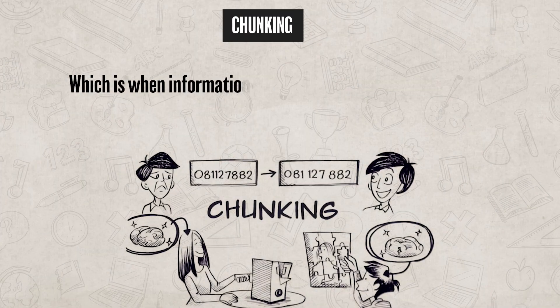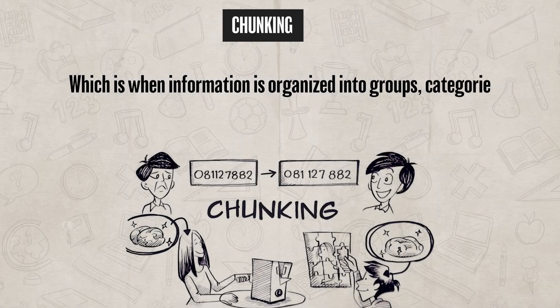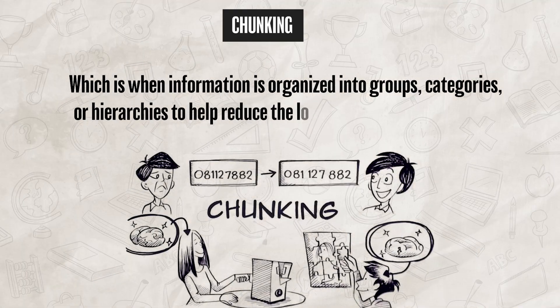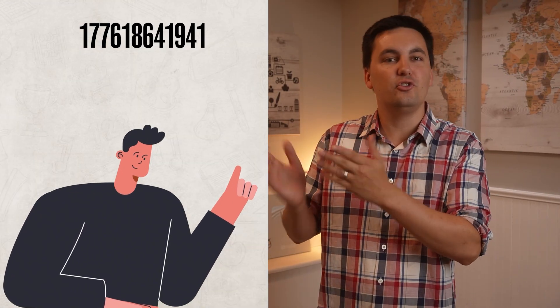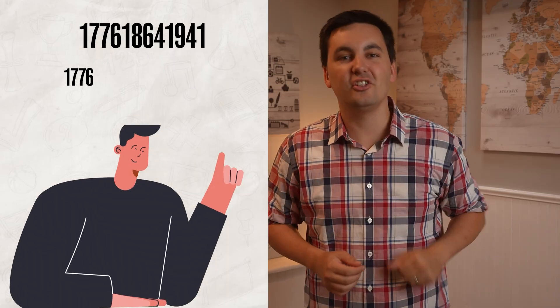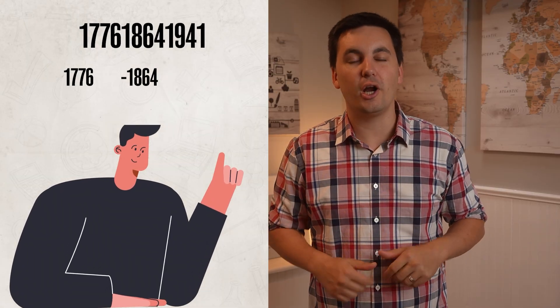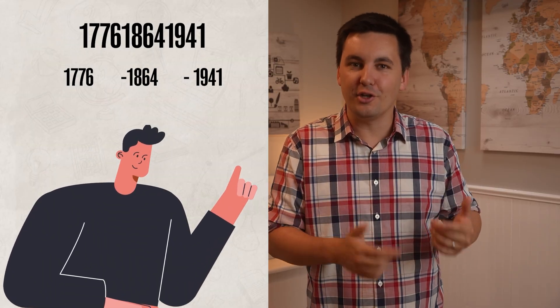Another encoding strategy is chunking, which is when information is organized into groups, categories, or hierarchies to help reduce cognitive load on your working memory. For example, instead of trying to remember a long string of digits, you could chunk numbers into groups like 1776, 1864, and 1941, which makes them much easier to remember. Chunking works because our working memory can only hold about seven items at a time, and combining information into a group reduces the number of individual items you're trying to remember.